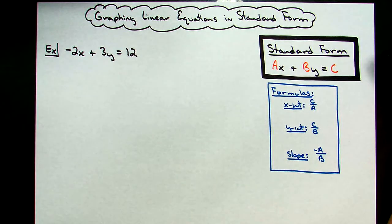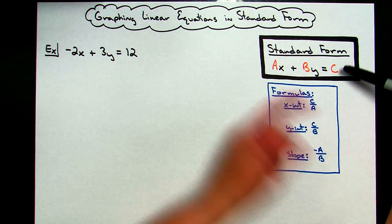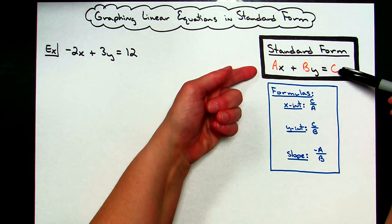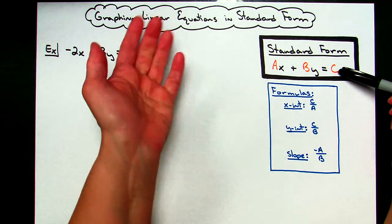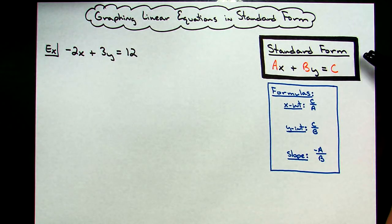Now, a lot of times teachers will say, if you've got it in standard form, then just solve for Y and rewrite into slope-intercept form, and then you can easily graph the equation. And that is true, and that is a valid method.